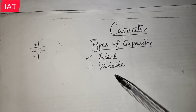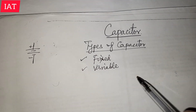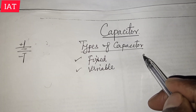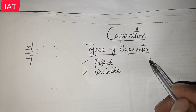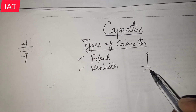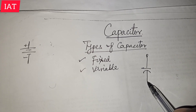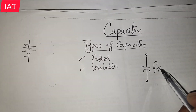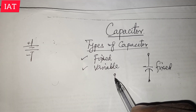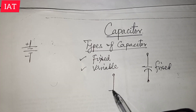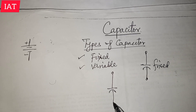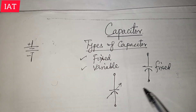Looking at the symbolic representation of a fixed capacitor, it looks like this — two parallel lines. This symbolizes a fixed capacitor. For a variable capacitor we use almost the same symbol but the difference is that we have a stroke through it, and this represents the variable capacitor.